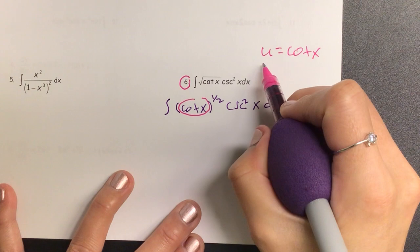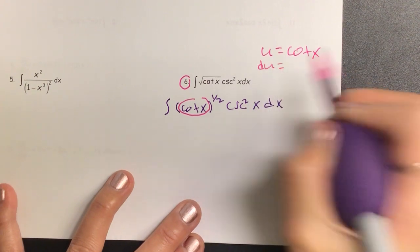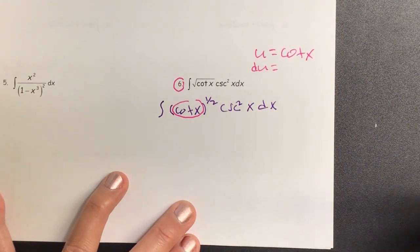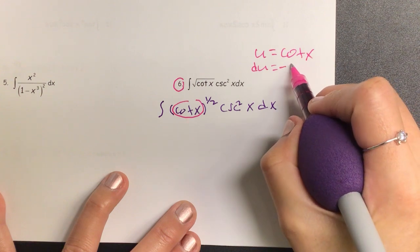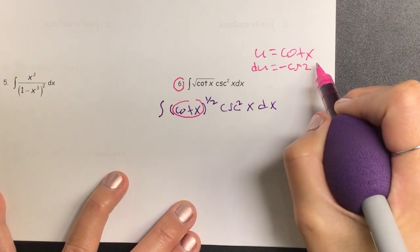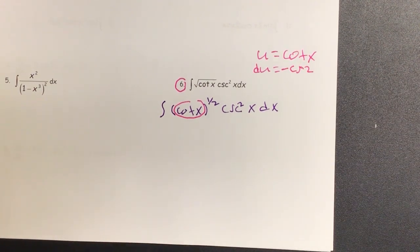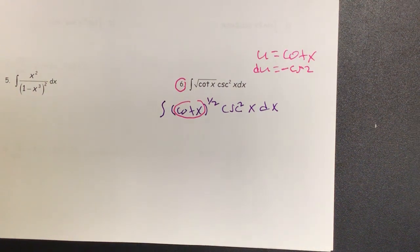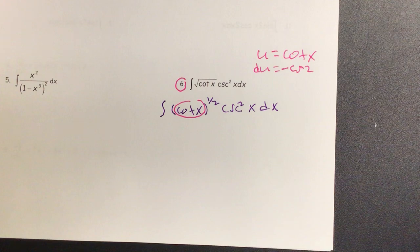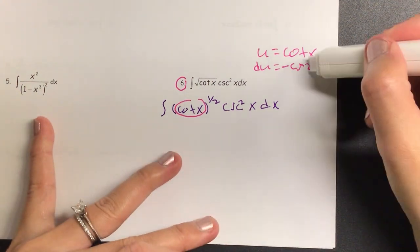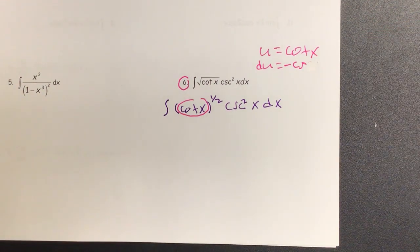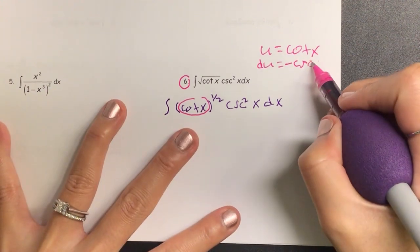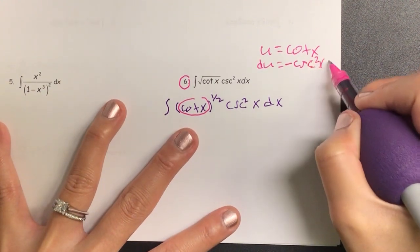So when I derive the first one, we get du is equal to the derivative of cotangent is negative what? Cosecant squared dx.